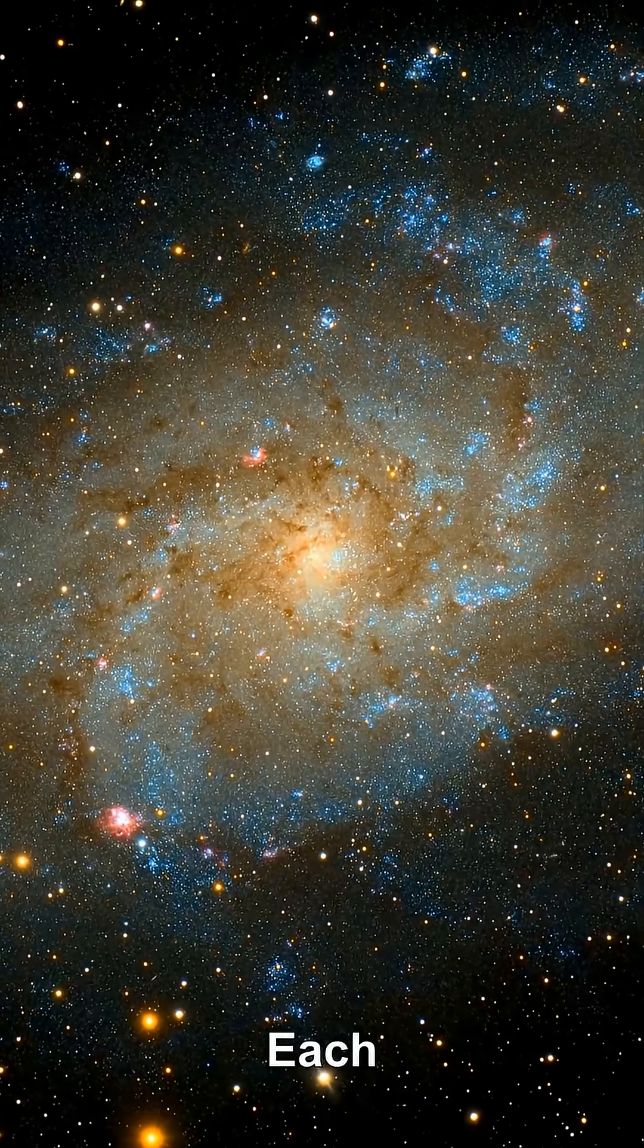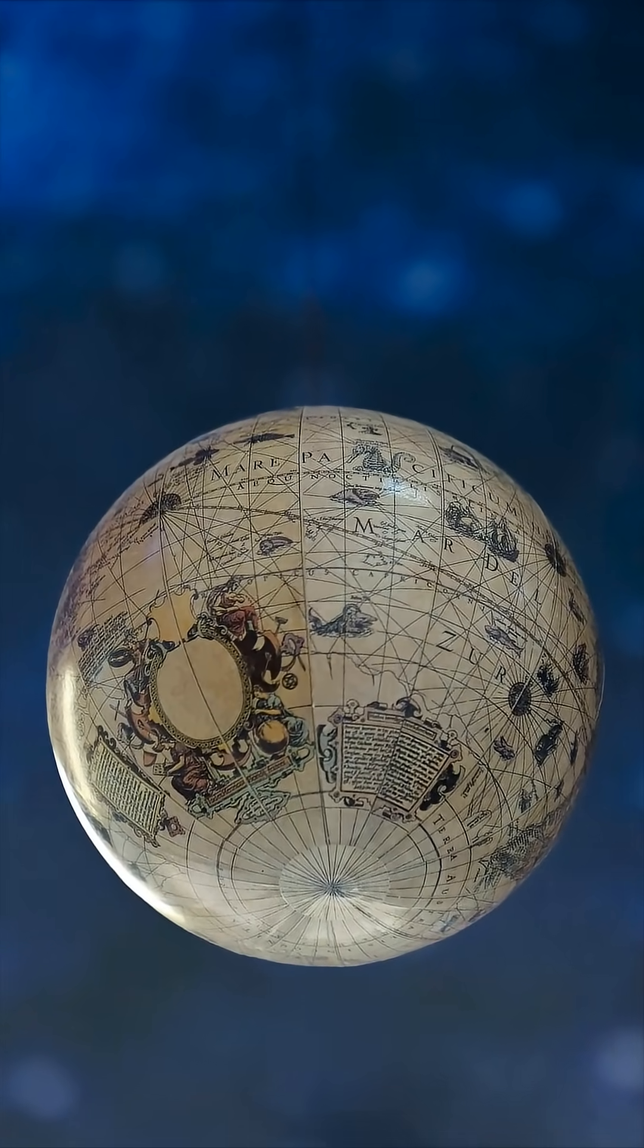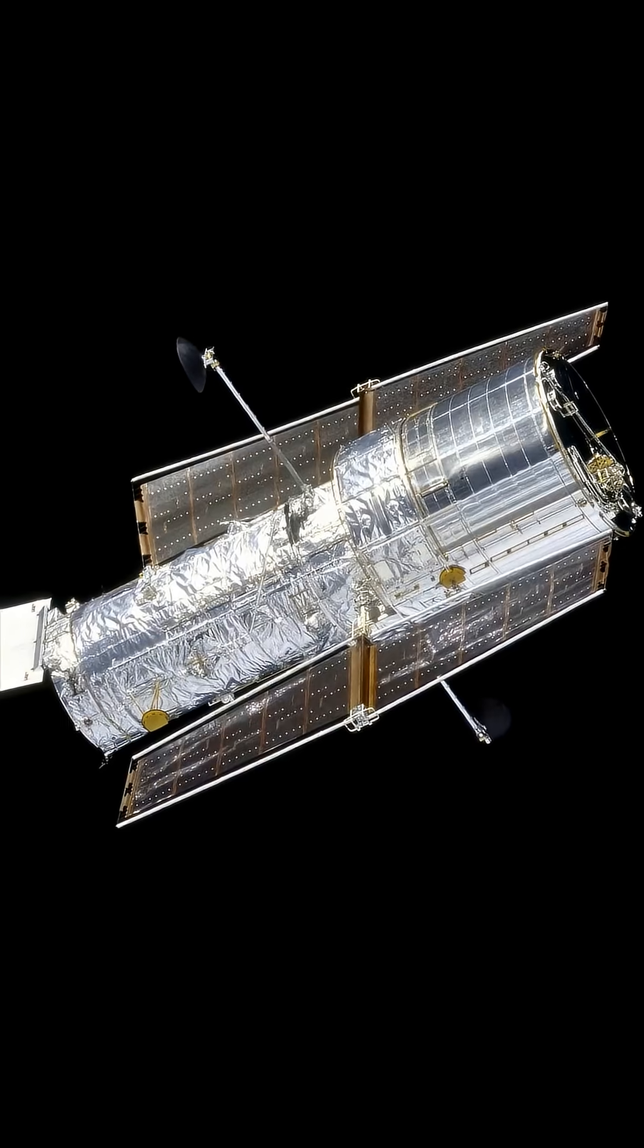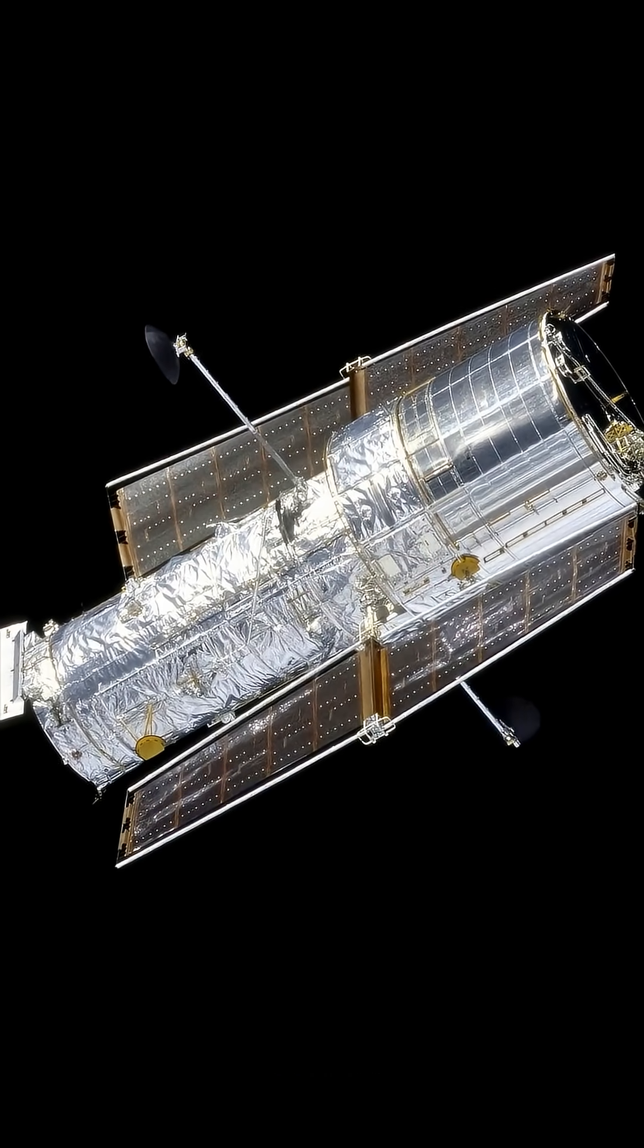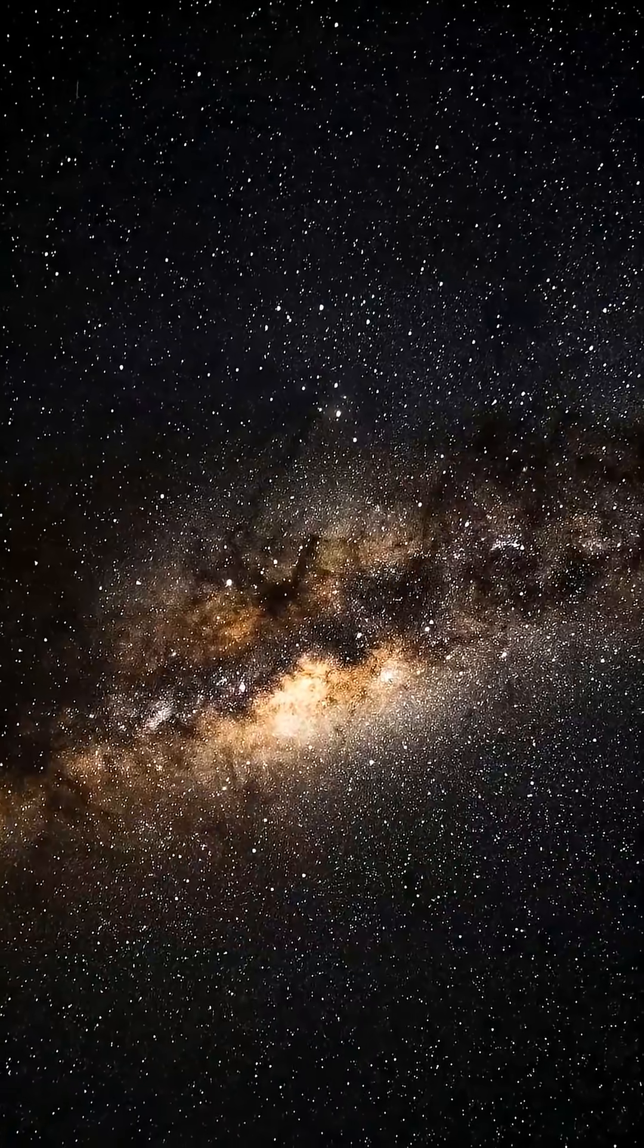For GPS satellites, weaker gravity up in orbit makes the atomic clocks tick faster by about 45 microseconds per day, while the satellite's high speed makes those clocks tick slower by about 7 microseconds per day.